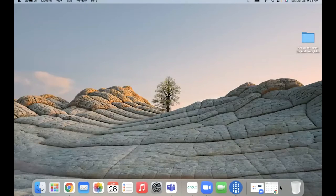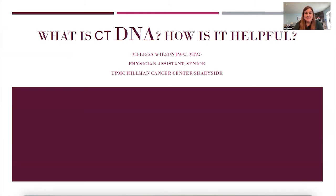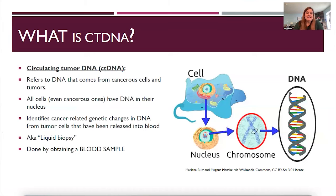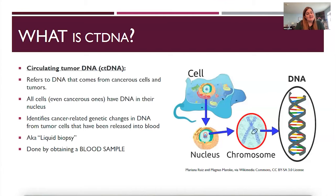So what is ctDNA and how is it helpful to us, particularly in melanoma? ctDNA stands for circulating tumor DNA — the DNA that comes from cancer cells or tumors. All cells, even cancerous ones, have DNA in their nucleus. This test identifies cancer-related genetic changes in the DNA from tumor cells that are released into the blood.